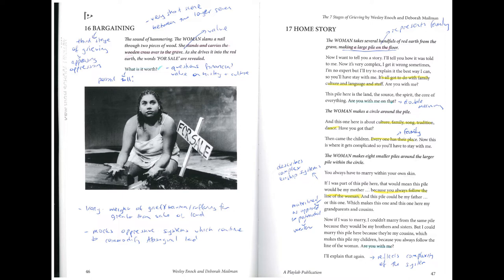The woman makes a circle around the pile. And this one here is about culture — family, song, tradition, dance. Then came the children. Everyone has their place. Now this is where it gets complicated, so you'll have to stay with me. The woman makes eight smaller piles around the larger pile within the circle. You always have to marry within your own skin. If I was part of this pile, that would mean this pile would be my mother — because you always follow the line of the woman. And this pile could be my father, which makes this one and this one my grandparents and cousins. If I was to marry, I couldn't marry from the same pile because they would be my brothers and sisters, but I could marry this pile because they're my cousins. Are you with me?